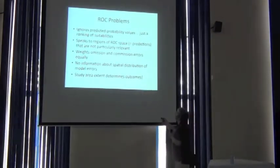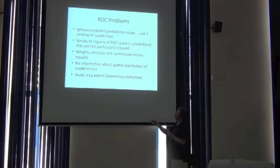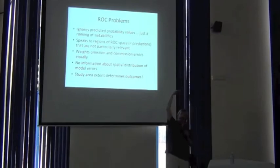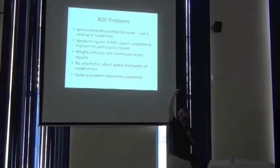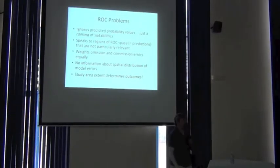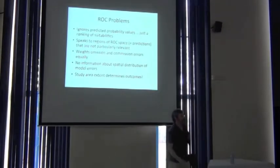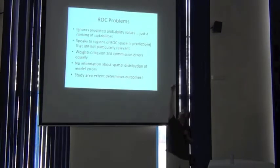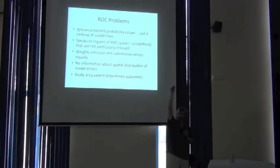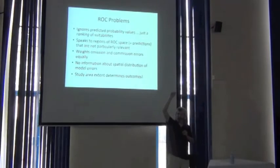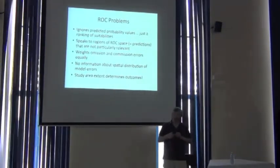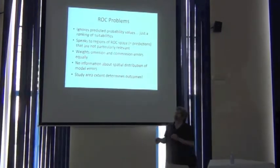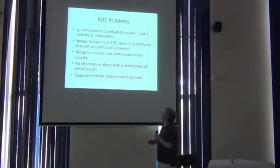First of all, it ignores the predicted probability values. It's based on just a ranking of them. So you might have a suitability that goes from 0.99, 0.98, 0.97, 0.6, 0.62, right? Well, all that matters is the ranking. And these ones that were separated by one hundredth are the same as the ones that are separated by 0.3. So it's a relative ranking. It ignores the actual value.